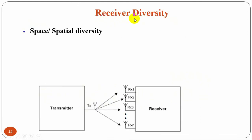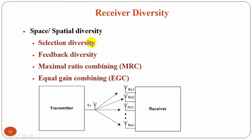Now we are going to discuss about receive diversity. In receive diversity, we have one transmitting antenna and many receiving antennas. Receiver diversity is implemented using space or spatial diversity, where several antennas are separated in space. The types of receiver diversity are selection diversity, feedback diversity, maximal ratio combining, and equal gain combining, where MRC and EGC are the diversity combining techniques.